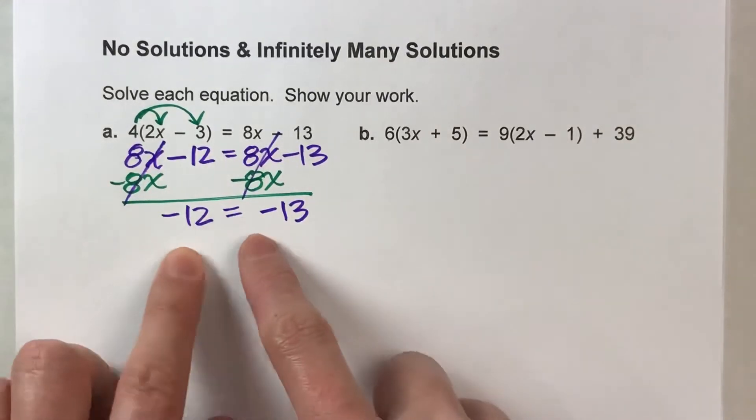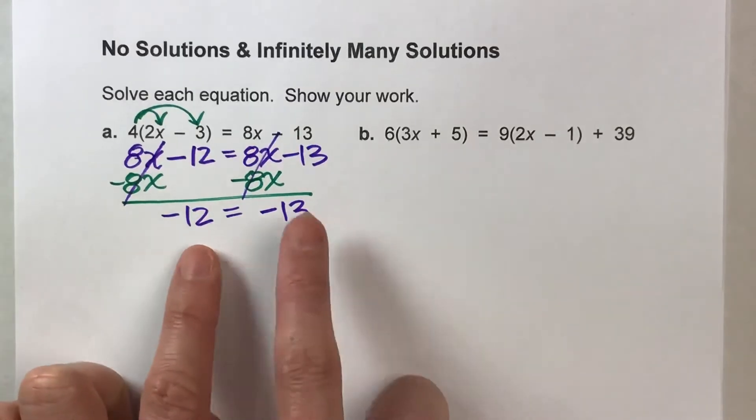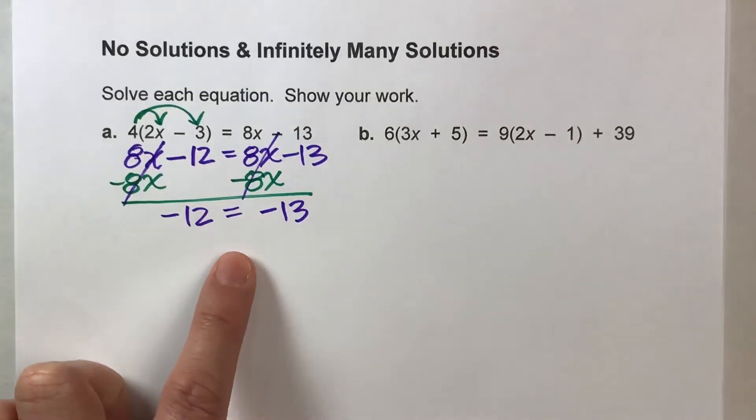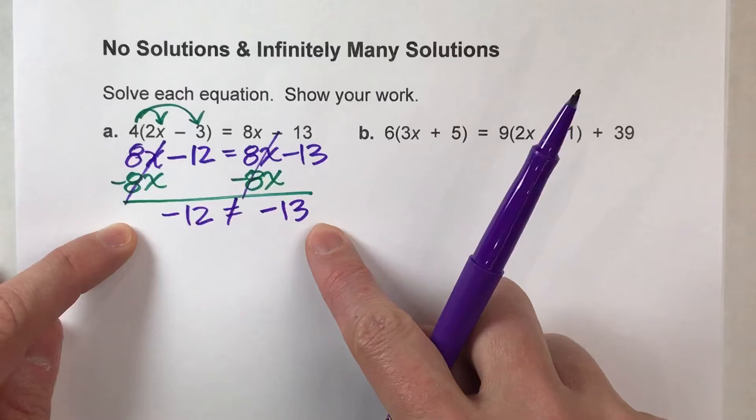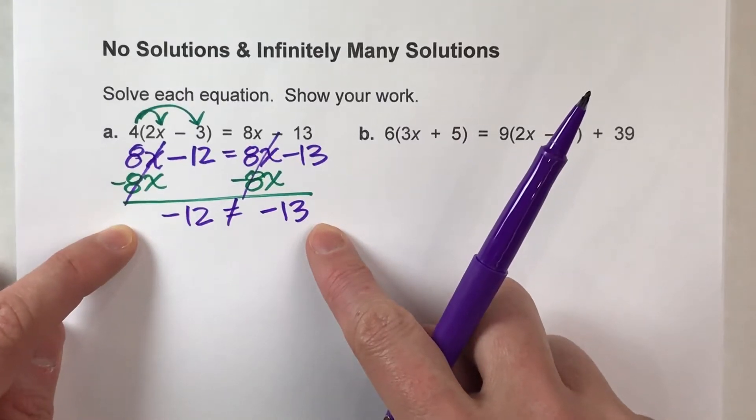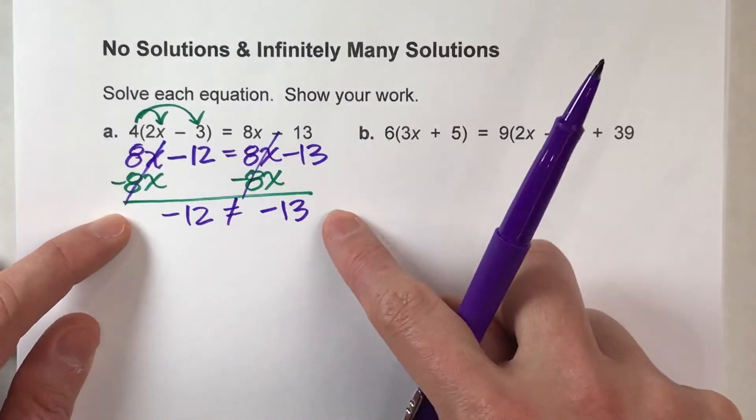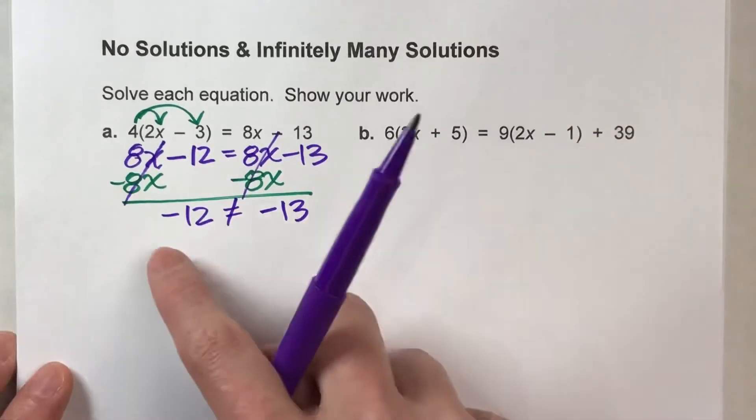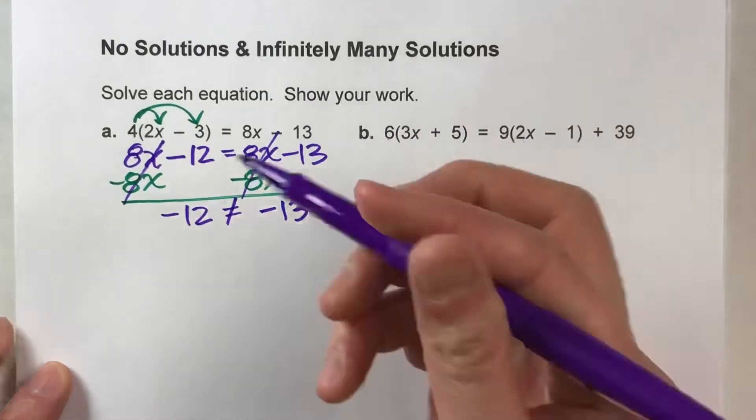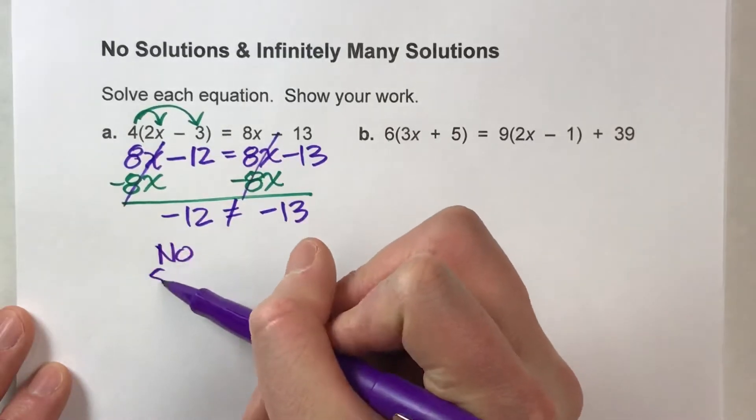And we have a statement that says negative 12 equals negative 13. Now, negative 12 does not equal negative 13. This is not possible. In fact, here, I'm going to put a slash here. Negative 12 doesn't equal negative 13. This is an impossible situation with no variables. When you come across a situation where you have no variables left and a number is set equal to a number that it clearly cannot equal, that means there are no solutions.